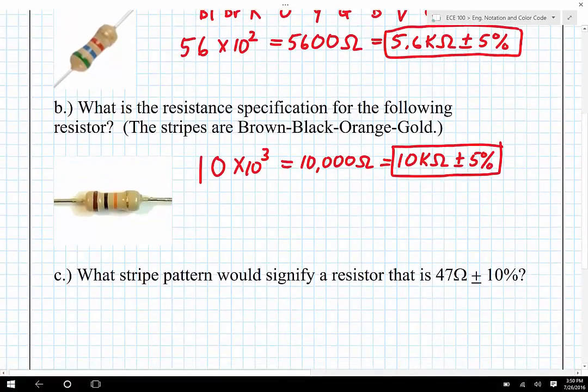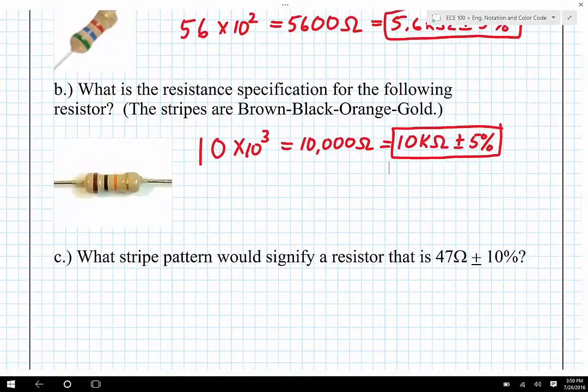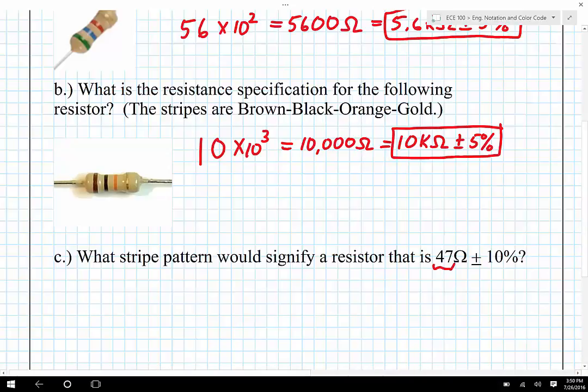Now let's see if we can go the other direction. What stripe pattern would signify a resistor that is 47 ohms plus or minus 10%? Okay, as soon as I see that it's 47, that there are only two digits there, I know that this is going to be a four stripe resistor. Two stripes for the coefficient, one stripe for the power of 10, and one stripe for the tolerance.